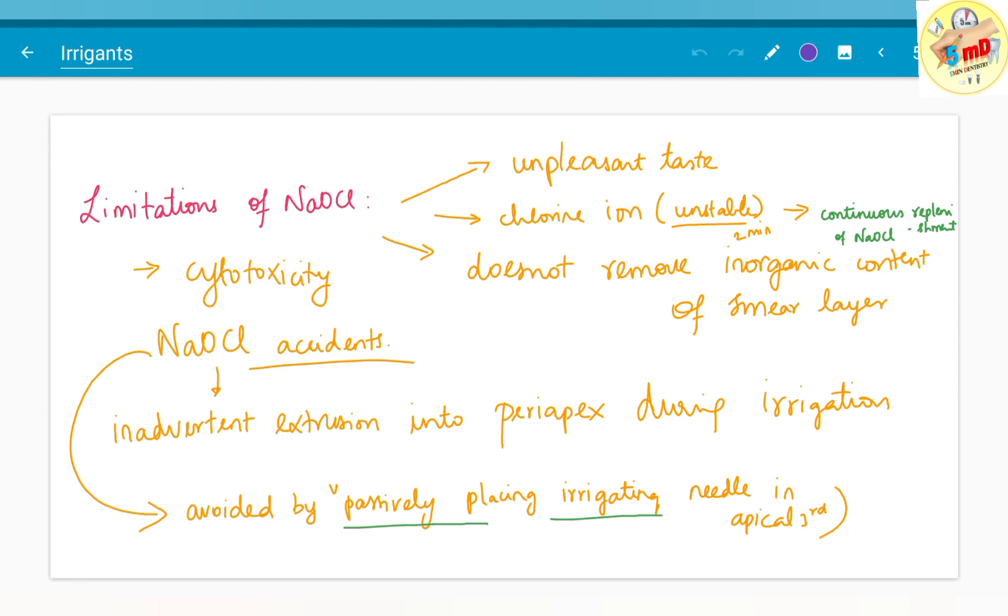The limitations of NaOCl include cytotoxicity as the major disadvantage. As long as it remains in the canal it is not a problem, but when it crosses the periapex, NaOCl accidents occur due to inadvertent extrusion into the periapex during irrigation.